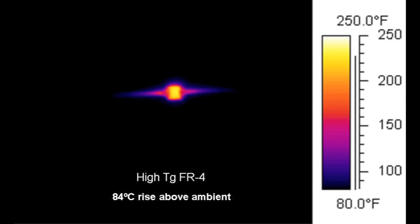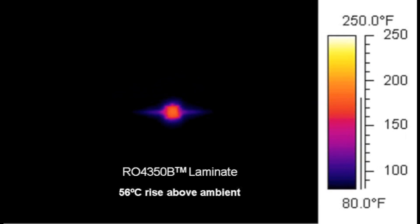You can see here on the slide in the upper left a high-performance, high Tg FR4 material had a heat rise of about 84 degrees C above ambient. That's with a thermal conductivity of about 0.25 watts per meter per K.